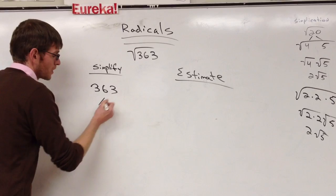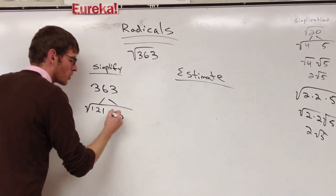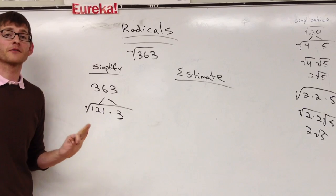Talia. 121 and 3. 121 and 3. Why is 121 a really good one to pick, Talia? Because it's a perfect square.